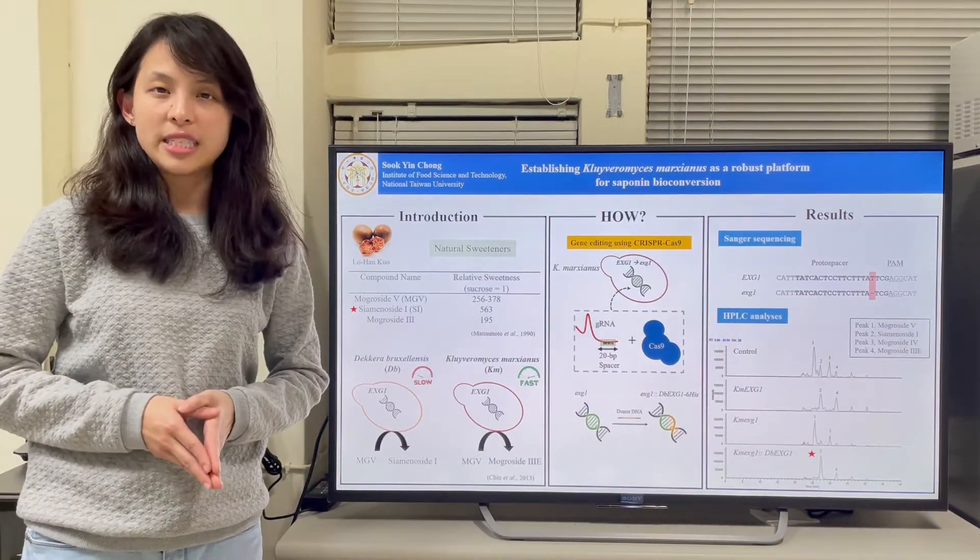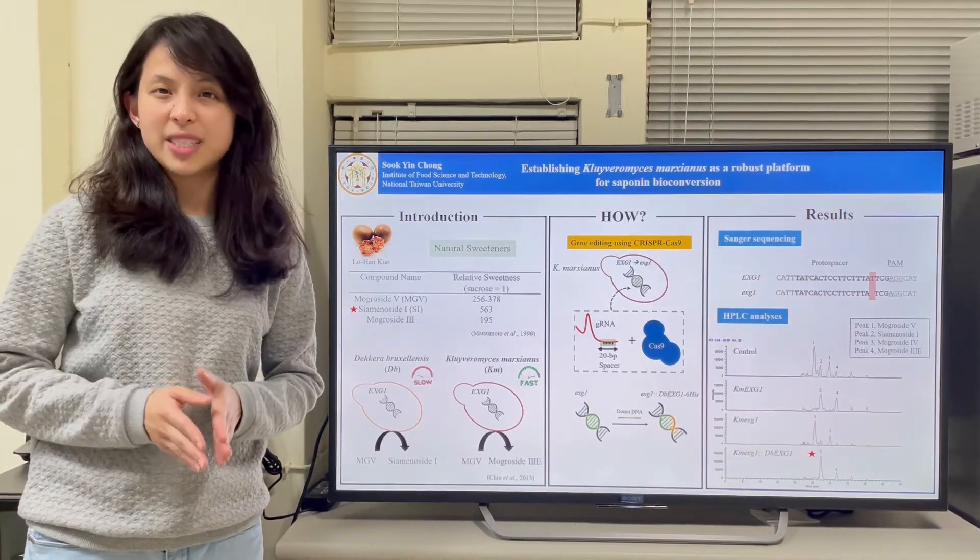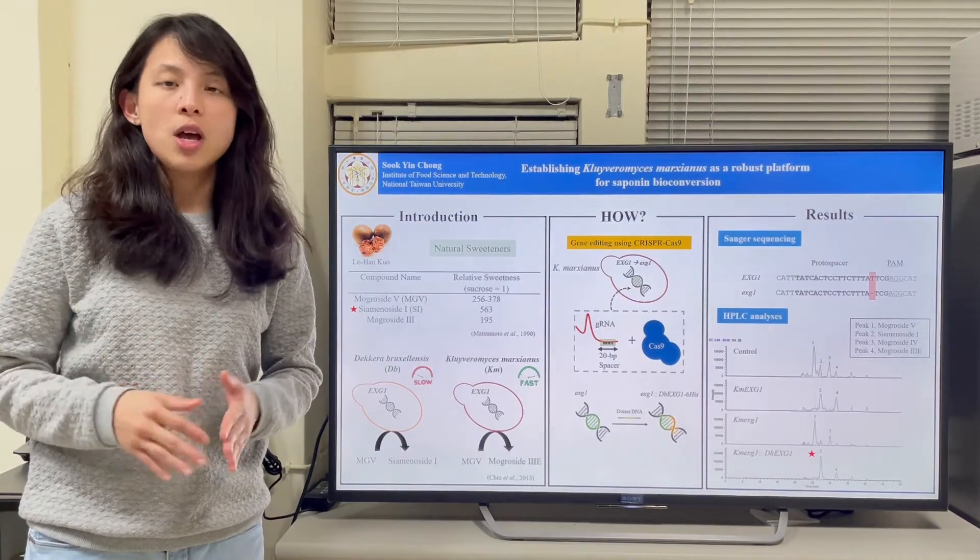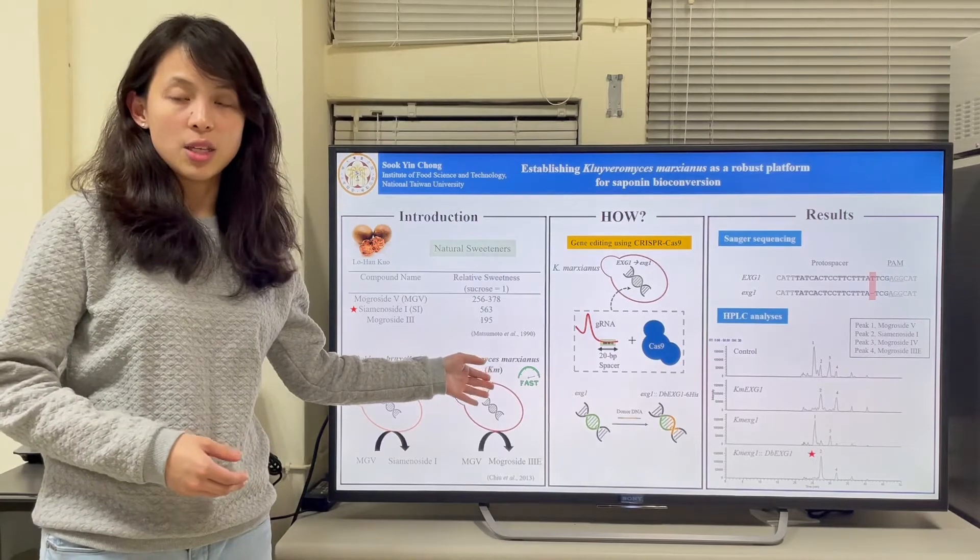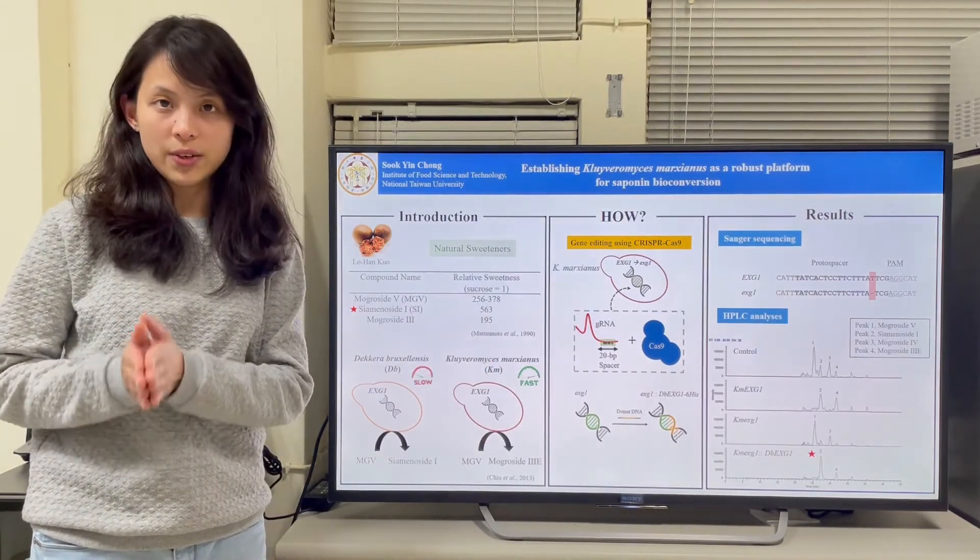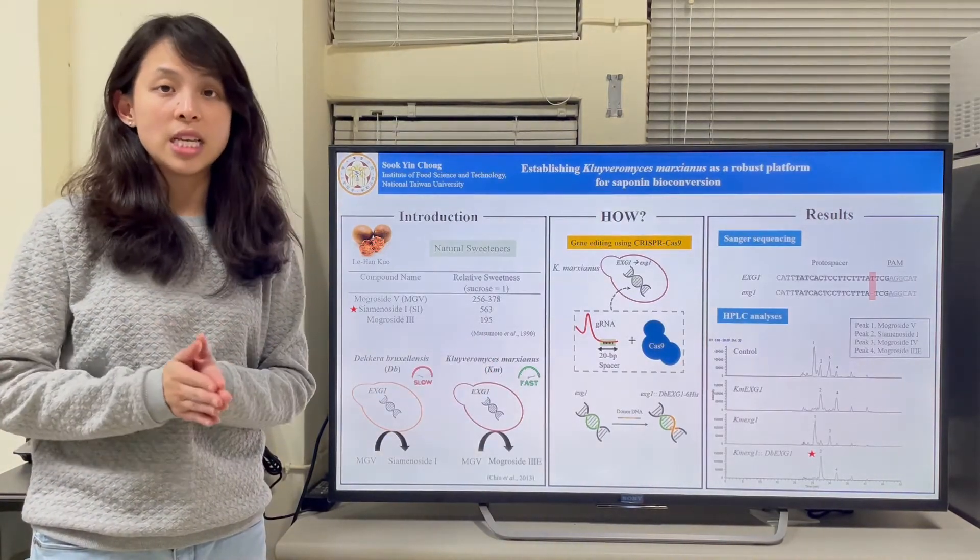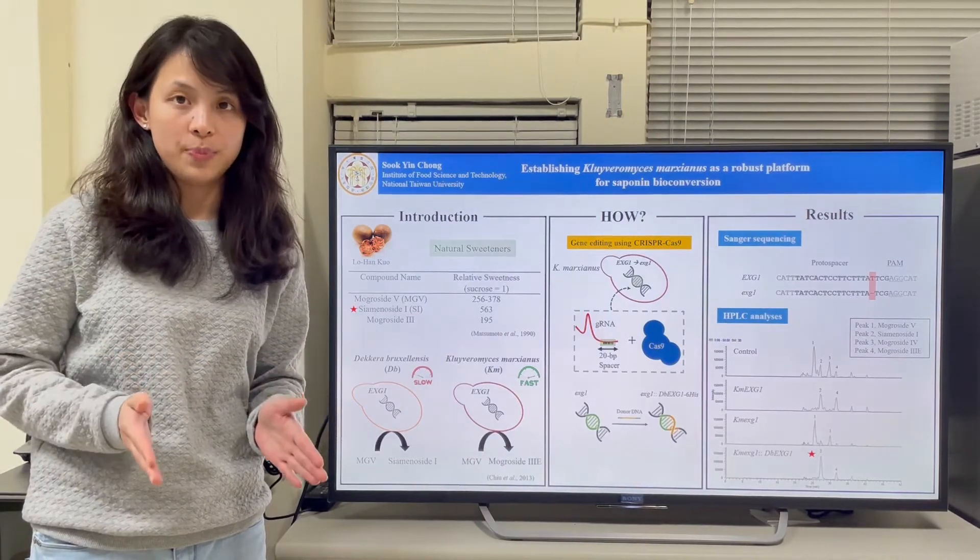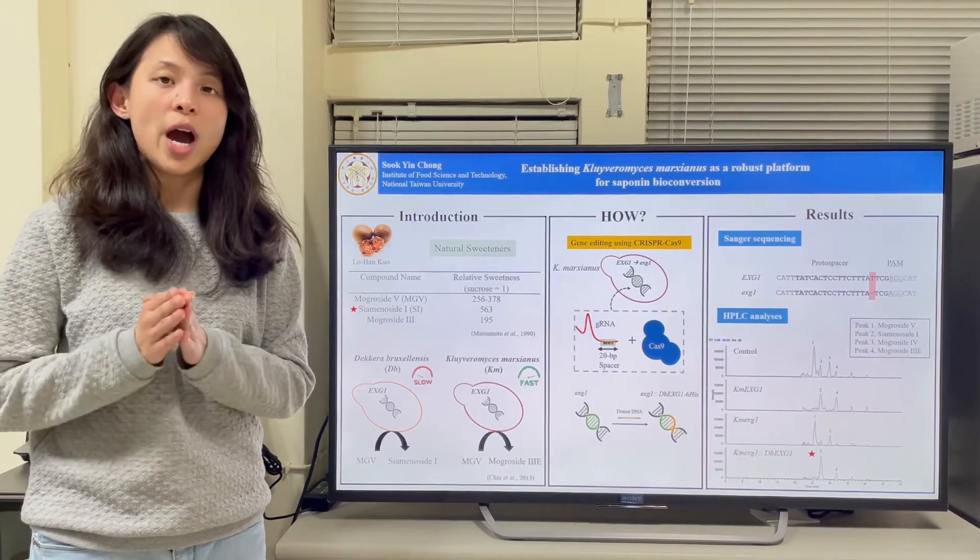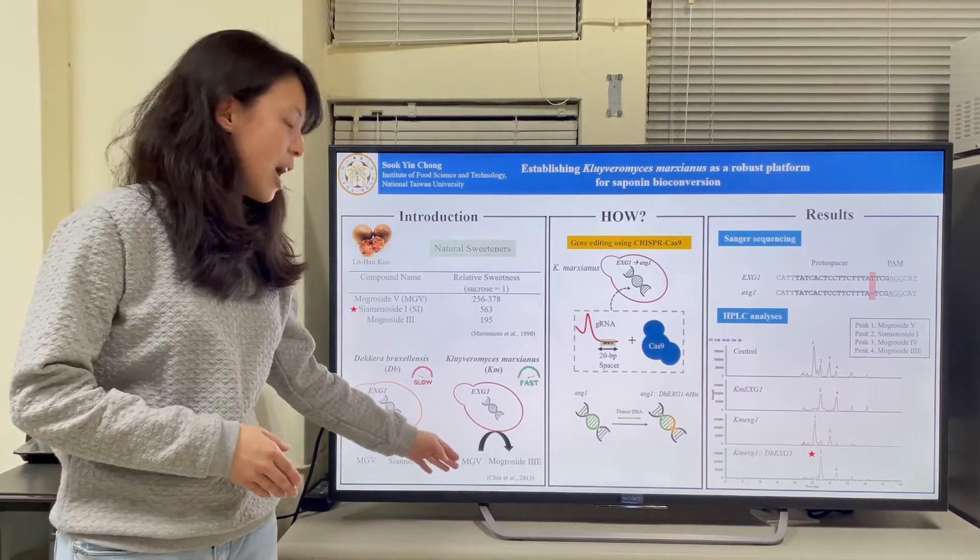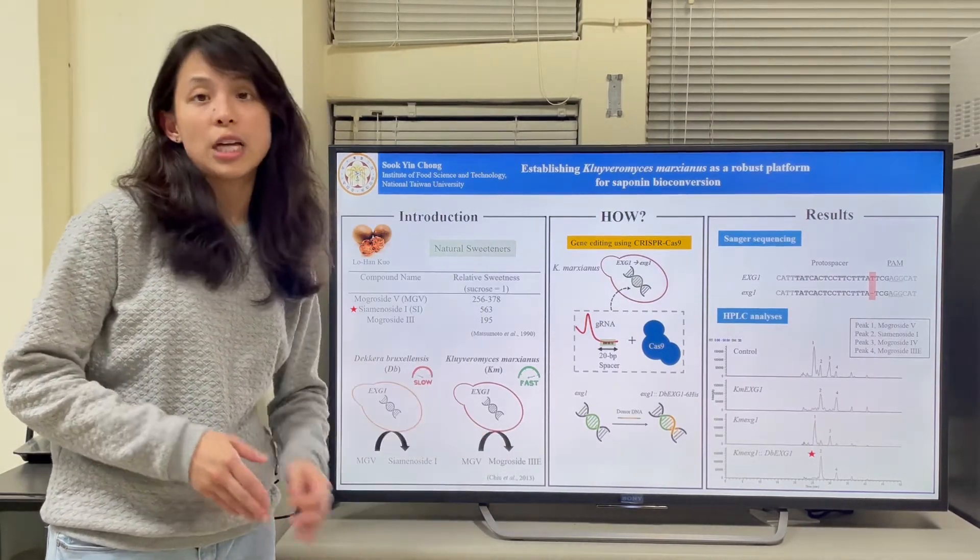But the problem is the growth of these Debaryomyces hansenii is very slow. So we tried using a different yeast called Kluyveromyces marxianus, which has rapid growth and high protein secretory capacity as a host applied for mogulcide bioconversion. But the EXG1 in Kluyveromyces marxianus will hydrolyze mogulcide 5 and bioconvert into mogulcide 3E.